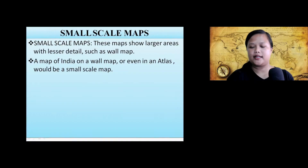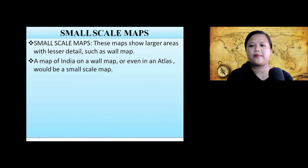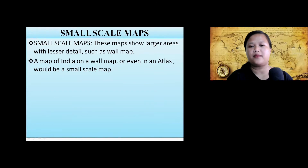Next is small scale maps. In these maps, they show larger areas with lesser details, such as world maps. A map of India on a world map or in an atlas — these are all small scale maps.